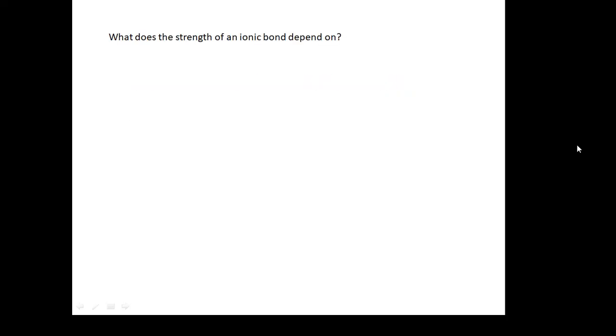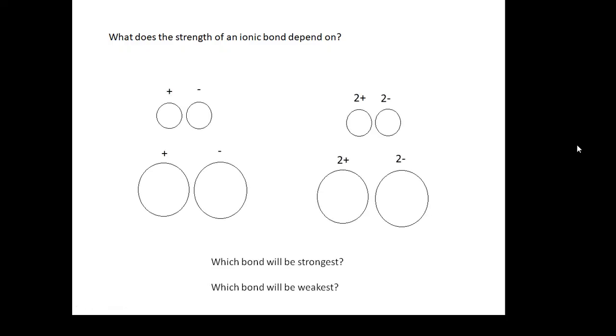What does the strength of an ionic bond depend on? Consider this. Here are four different cases. You'll notice that the ions are different sizes and have different amounts of charge. Which bond will be strongest? Can you figure out which bond will be strongest? The answer is this one here. This will be strongest for two reasons: firstly, because there's more charge - you've got two plus and two minus, so the electrostatic attraction will be bigger. Secondly, because the ions are smaller, and that means the average distance between the charges is smaller, so the force will be stronger.